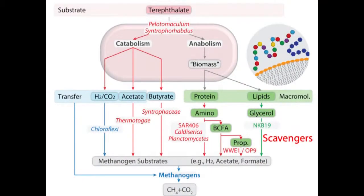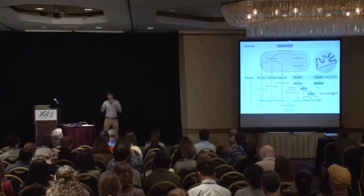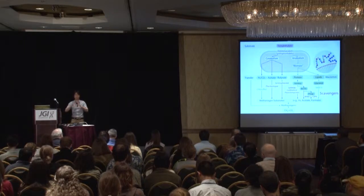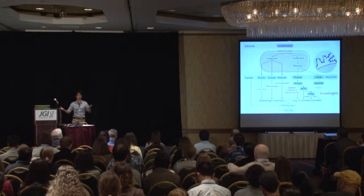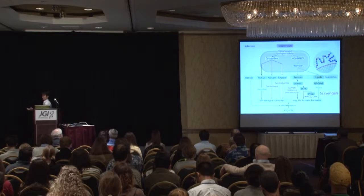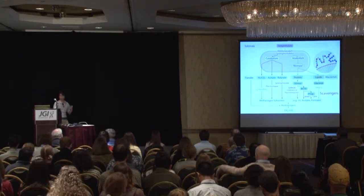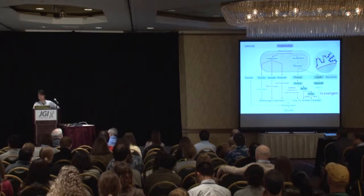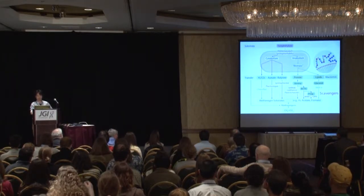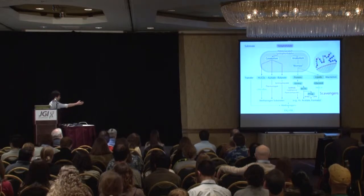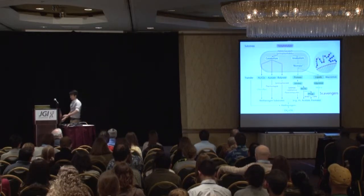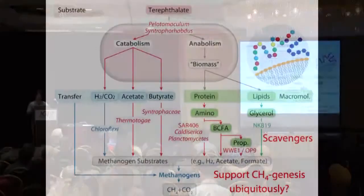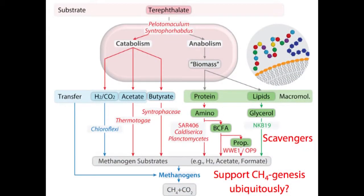We term these organisms scavengers — because they're scavenging biomass and detritus, you can imagine this ecological role would be common across different methanogenic environments, whether a wastewater treatment facility, groundwater, or soil. We very commonly find these organisms across these ecosystems, unlike the left-hand-side community of Syntrophaceae, Thermotoga, and Chloroflexi. We hypothesize that these clades may support methanogenesis ubiquitously — a very interesting hypothesis for what these candidate phyla may be doing in methanogenic environments.